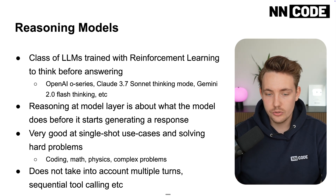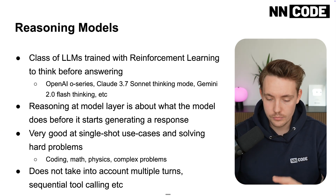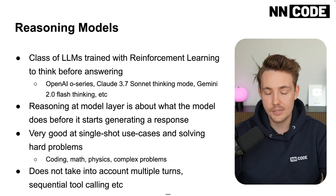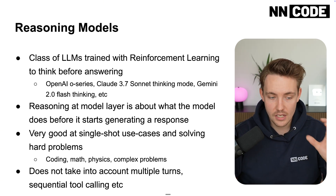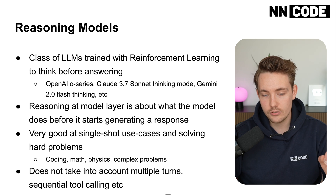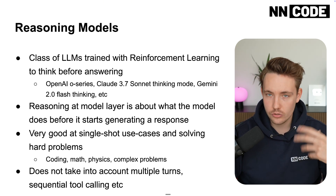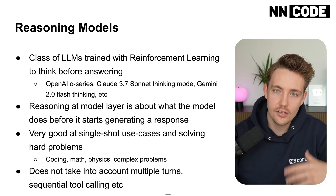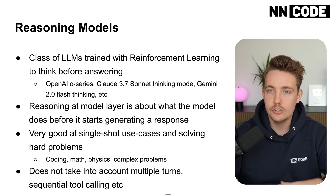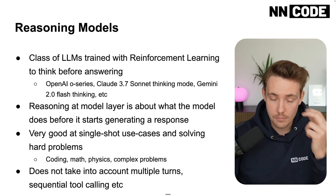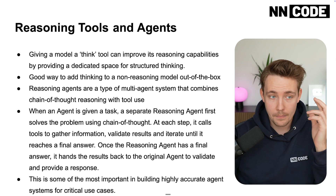Model-level reasoning is very good for single-shot use cases and solving hard problems — coding, math, physics, complex problems — breaking them down to first-principles thinking. However, it does not take into account multiple turns, sequential tool calling, and so on. We need to build that at the agent level, not the model level.